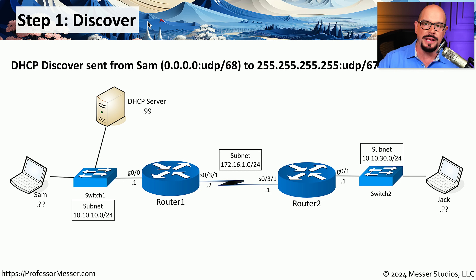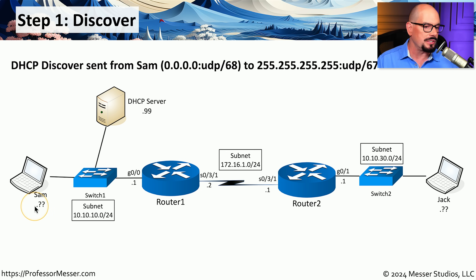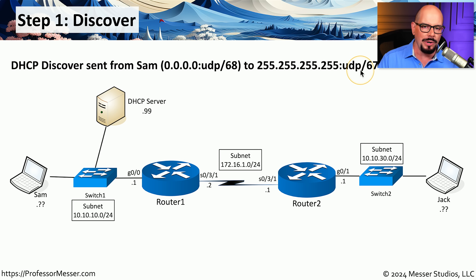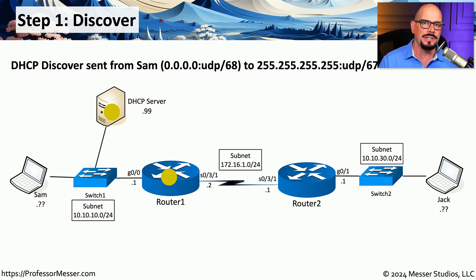Her laptop will go out to the network and try to discover where all of the different DHCP servers might be and what IP addresses might be available for her workstation. If you were to capture packets on this network, you would see a DHCP Discover message sent from Sam's computer. Since Sam does not have an IP address, it is sent from IP address 0.0.0.0 over UDP port 68, and it's sent across the network as a broadcast so that every device on the network will see this communication. When it reaches the switch, because it's a broadcast, it is sent to all of the devices on this local subnet.